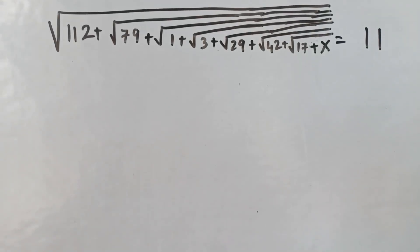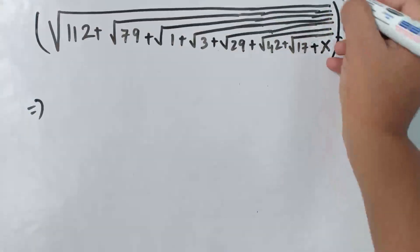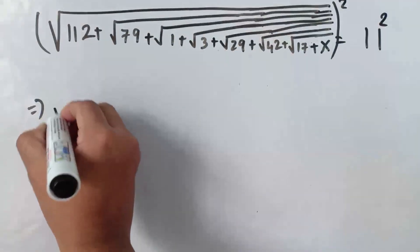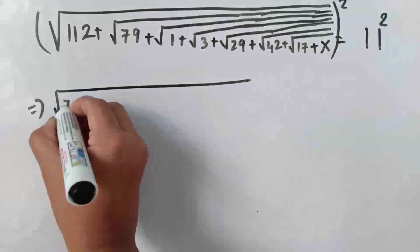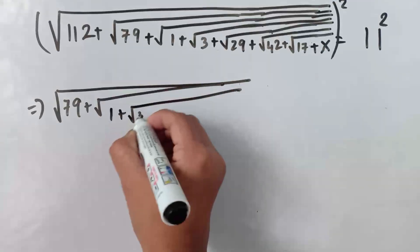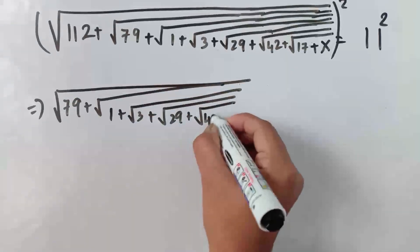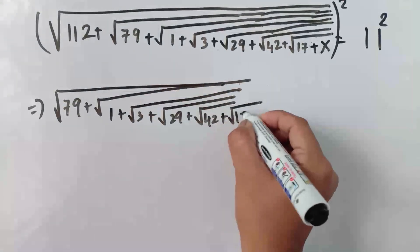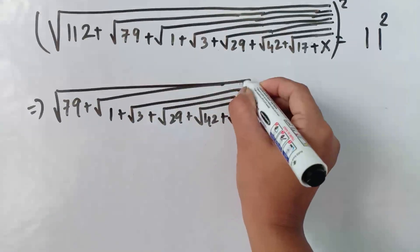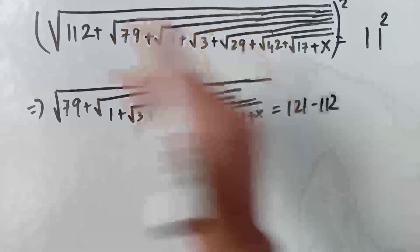Look, we have to find out the value of x here and this is a big square root. So what we will do here, we just square both sides of this equation first. It comes: square root of 79 plus square root of 1 plus square root of 3 plus square root of 29 plus square root of 42 plus square root of 17 plus x, equals to 121 minus 112.